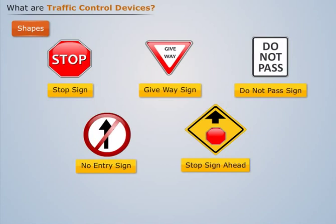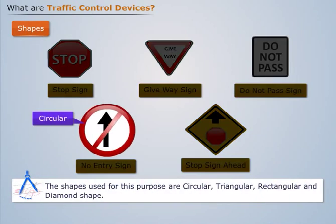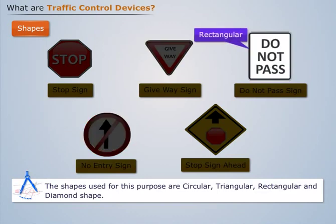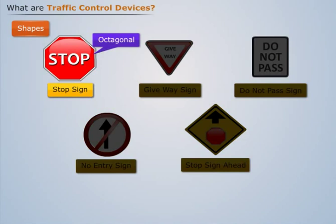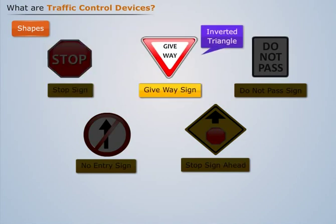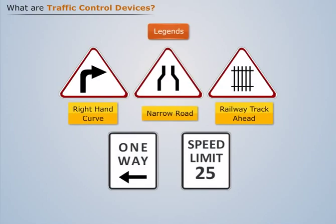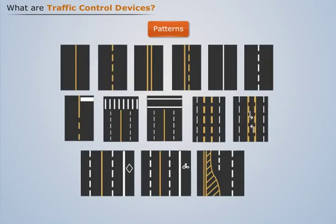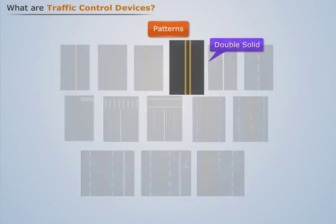Shape is the second element which is noticed easily. The shapes used for this purpose are circular, triangular, rectangular, and diamond shape. The octagonal shape is used for the stop sign and inverted triangle for the give way sign. Legend is another important aspect used for easy understanding of drivers — it should be short, simple, and specific. Patterns are used for road markings and complementing traffic signs. Generally, solid, double solid, and dotted lines are used.